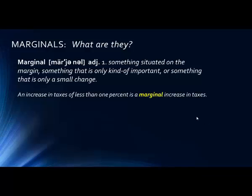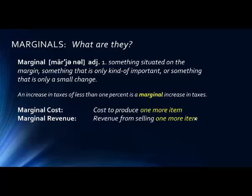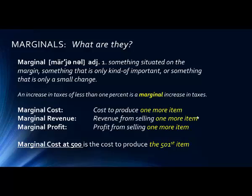In terms of businesses, a marginal cost is the cost to produce one more item. The marginal revenue is the revenue generated from selling one more item. And the marginal profit is the profit generated from selling and making one more item. So the marginal cost at 500 is the cost to produce the 501st item.